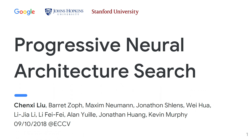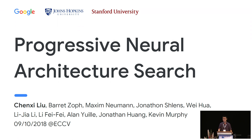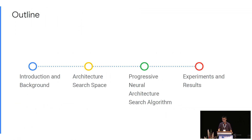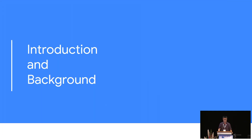Our next talk is Progressive Neural Architecture Search, and Chen Xi Lu will be presenting. Good morning, I'm Chen Xi from Johns Hopkins University, and today I will talk about Progressive Neural Architecture Search. This is joint work with many researchers across Google AI. The outline of the talk has four main sections, and I will start with introduction and background.